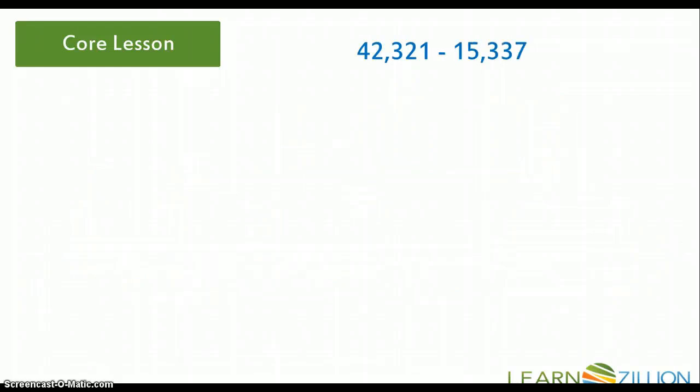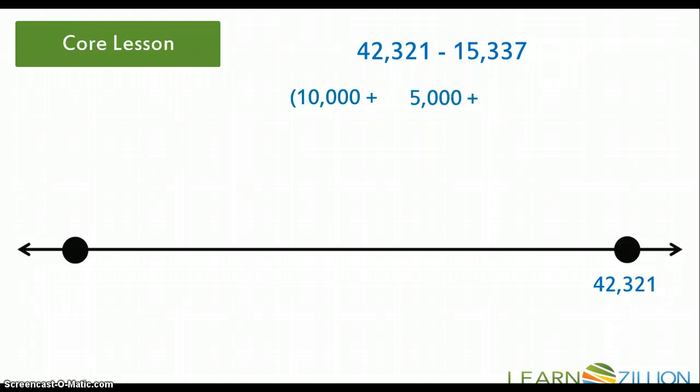Let's take a look at a couple of other numbers. 42,321 minus 15,337. There's my open number line. And I'm going to put my larger number on the far right hand side of my number line. So I put 42,321 over there. And then I'm going to break my smaller number 15,337 into expanded form. And I'm going to jump across my number line to the left so that my number is decreasing.